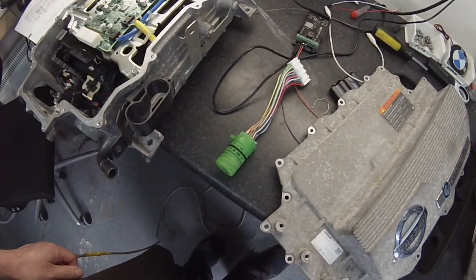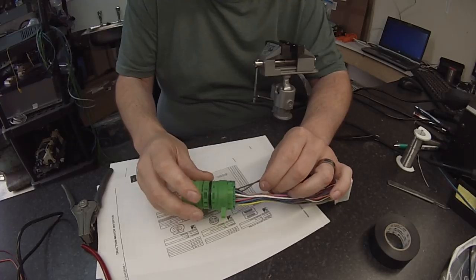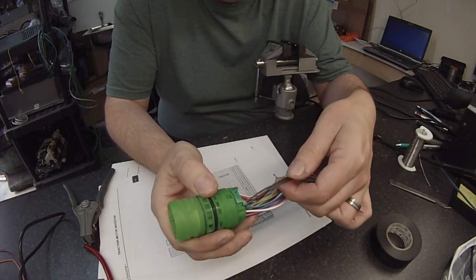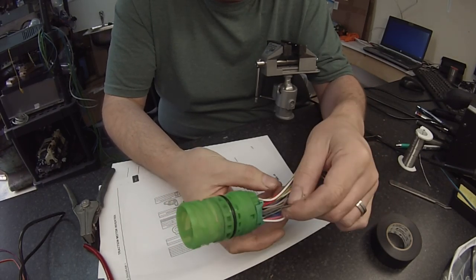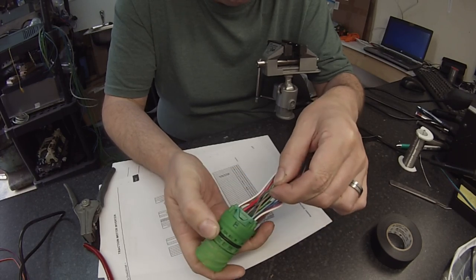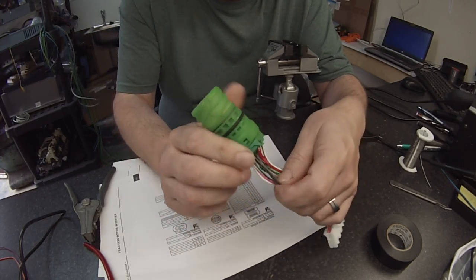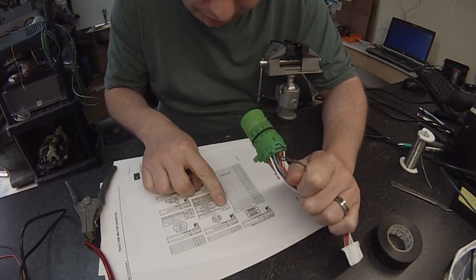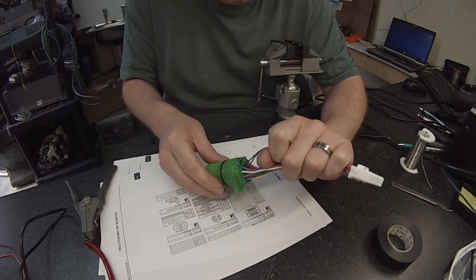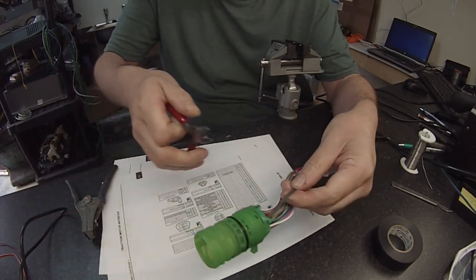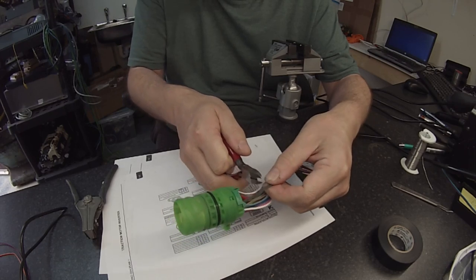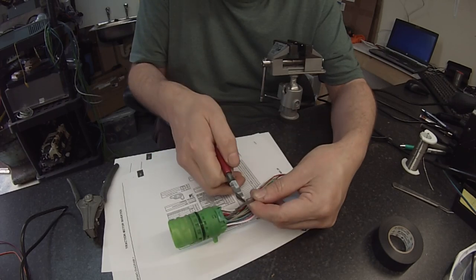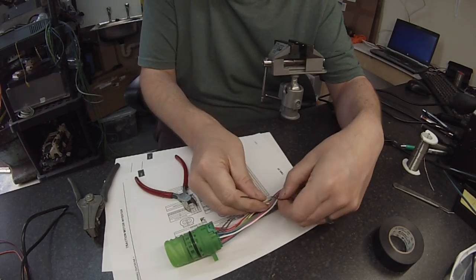All righty, so first thing we need is the permanent ground and the permanent power. Now these two gray wires here are our permanent ground and in the connector they equate to pins two and eight. So there are grounds, so what I'm going to do is going to snip them here. I'm leaving enough on this connector so that if I ever did need to reconnect it to this I could snip those two grounds.